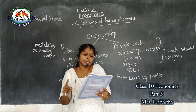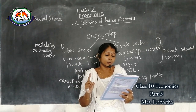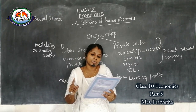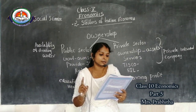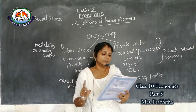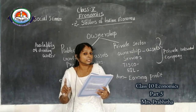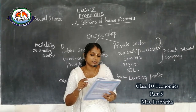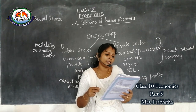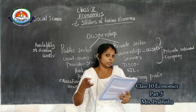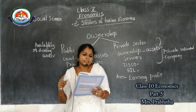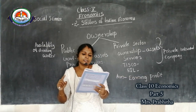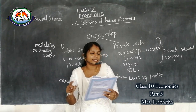Find the odd one out. Tourist guide, Dhobi, Tailor, Potter — the answer is Potter, because Potter is related to the secondary sector while the others are service sector workers. Teacher, Doctor, Vegetable vendor, Lawyer — the answer is Vegetable vendor, as the others require educational qualifications and are government jobs. MTNL, Indian Airways, Air India, Sahara Airlines, All India Radio — the answer is Sahara Airlines, as it is a private sector company.